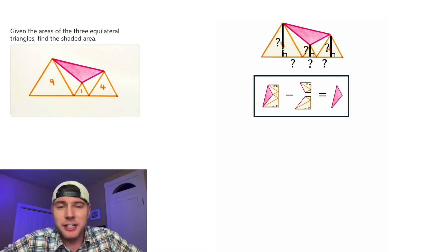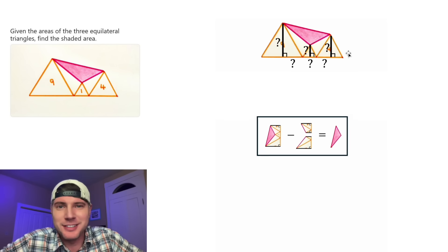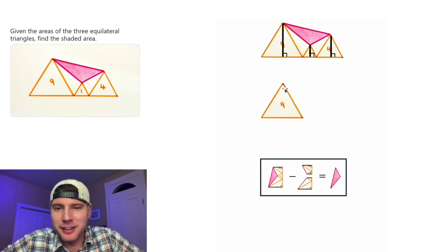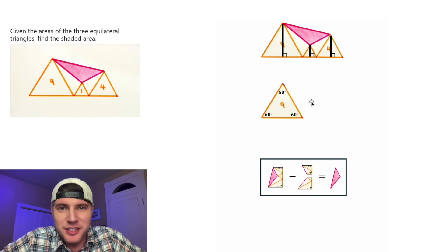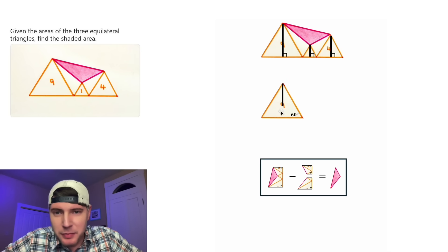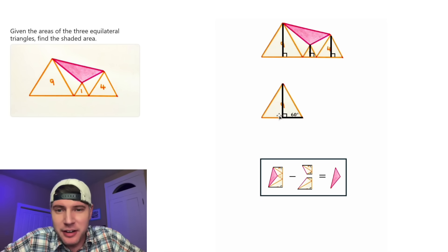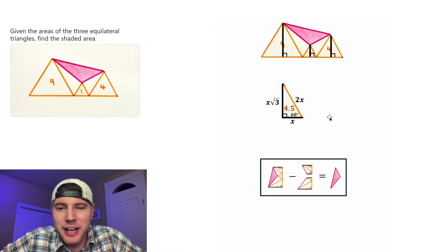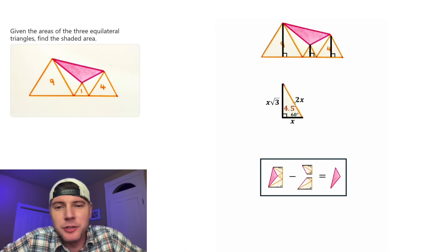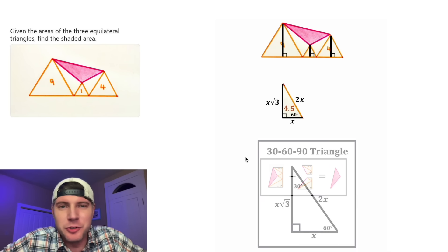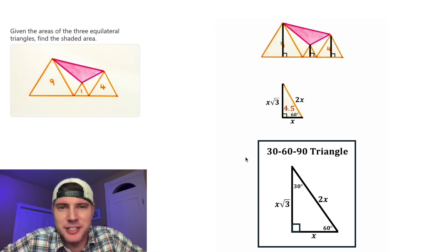We have to find the heights and bases of our equilateral triangles. Let's copy one of them down here. Since it's an equilateral triangle, all the angles will be 60 degrees. Let's draw this perpendicular line — this will cut the triangle in half, so the area of this 30-60-90 triangle is 4.5. Every 30-60-90 triangle has side lengths in these proportions. If the shortest side is X, the hypotenuse is 2X and the side opposite the 60 is X root 3.